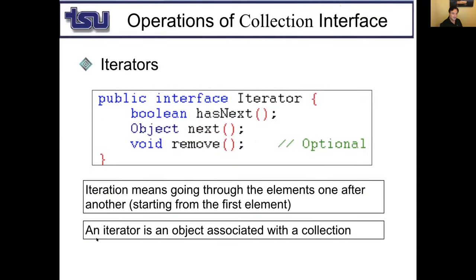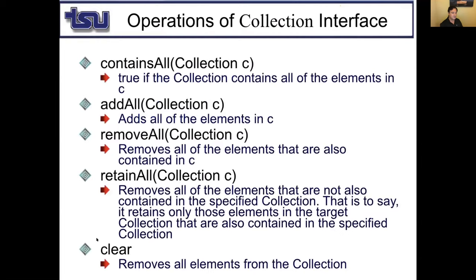The Iterator interface has three methods: hasNext, next, and remove. Iteration means going through elements one after another starting from the first. An iterator is an object associated with a collection. containsAll returns true if the collection contains all elements of C; addAll adds all; removeAll removes all of C; retainAll removes everything not in C; clear removes all elements.